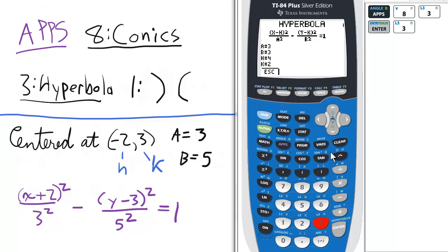So let's enter 3 for a, scroll down, 5 for b, and then let's have our h as negative 2, and then our k will be 3.